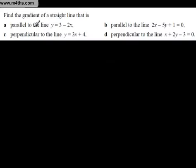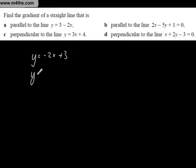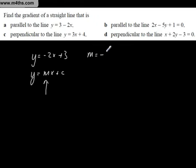Find the gradient of a straight line that is parallel to the line y equals 3 minus 2x. If we rearrange this as y equals minus 2x plus 3, we have the form y equals Mx plus C, and we can clearly see that the gradient is minus 2. So the gradient of a parallel straight line will also have an M value of minus 2.